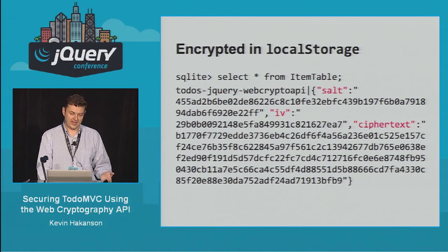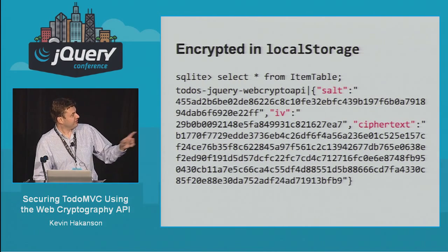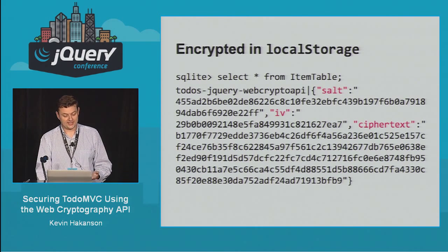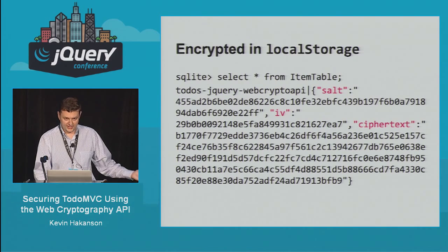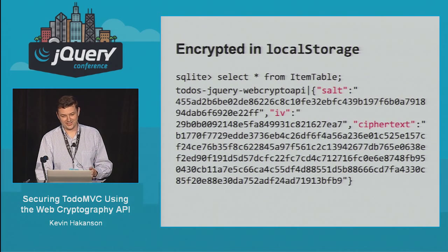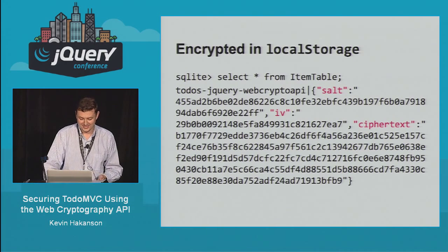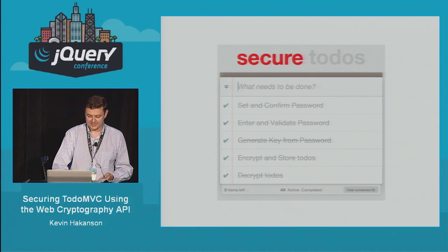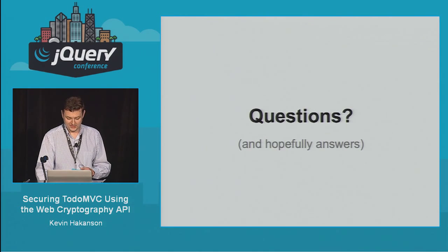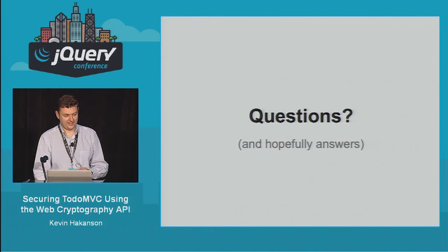So if you type the wrong password, the decryption fails and the error propagates all the way back up, triggering the CSS shake animation. Now looking at local storage again with the SQLite SELECT * FROM item table — I can see the salt, IV, and cipher text as hex data. You can't tell what it was anymore. All five requirements checked off — secure Todo MVC is done.